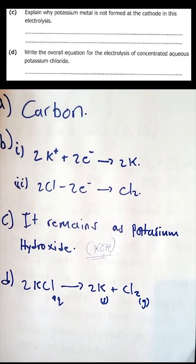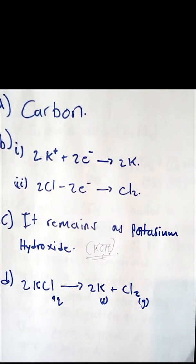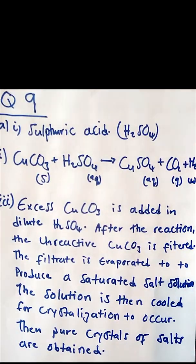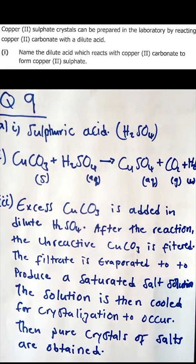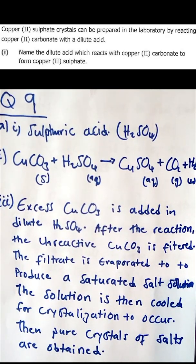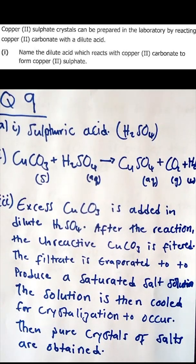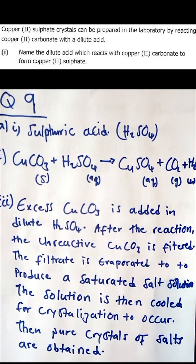This wraps up Section A of chemistry, and it was very straightforward. Now let's move to Section B. Section B has 30 marks with four questions, and you are told to answer any three. Instead of answering any three, we are going to answer all the questions and obtain 40 marks. Each question carries 10 marks, and we start with question number nine.